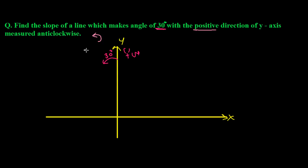So here this line L is making an angle of 30 degrees with the positive direction of the y-axis, measured in the anti-clockwise direction. The clock moves like this, so this is called clockwise, and this is the opposite direction of the clock, that's why we say anti-clockwise.